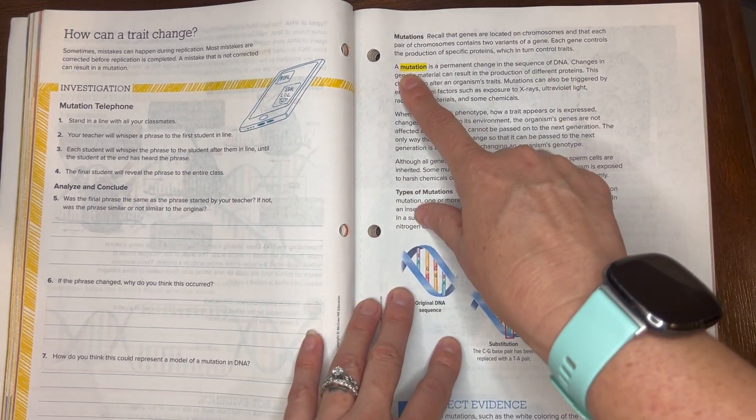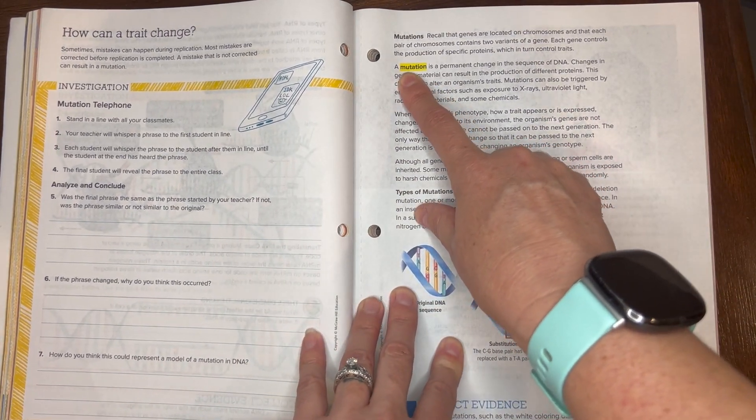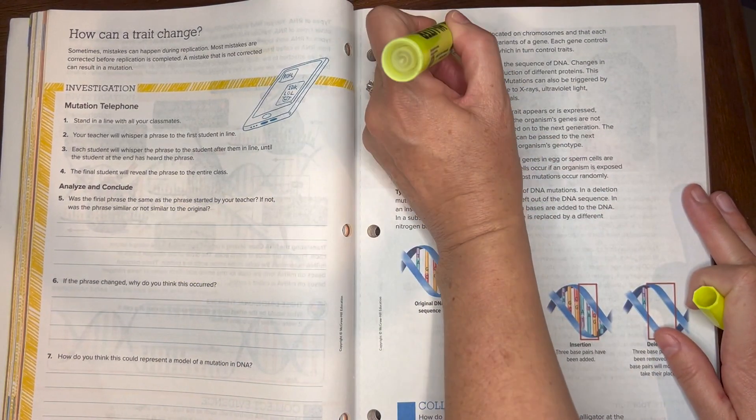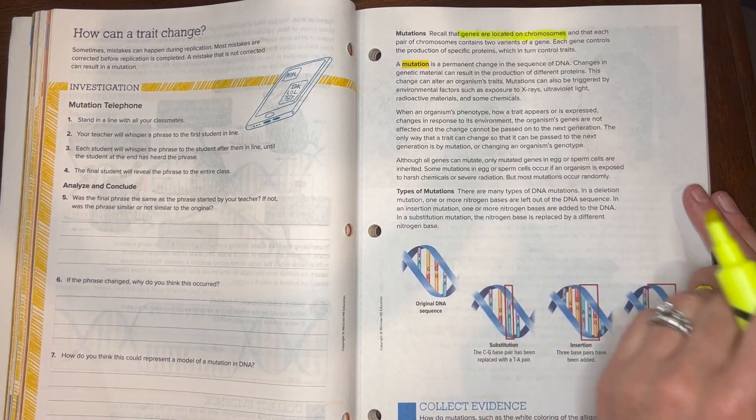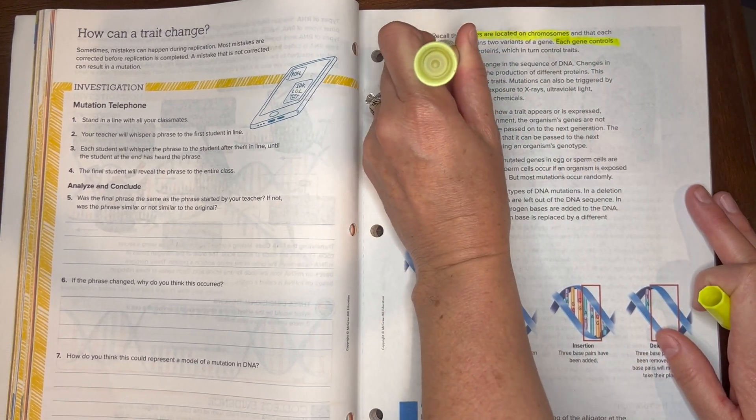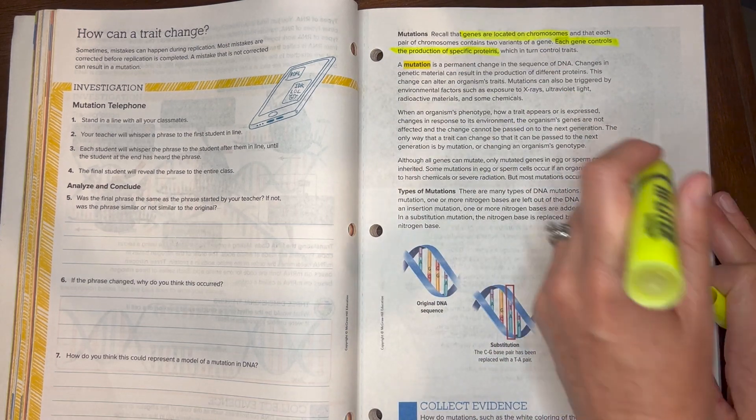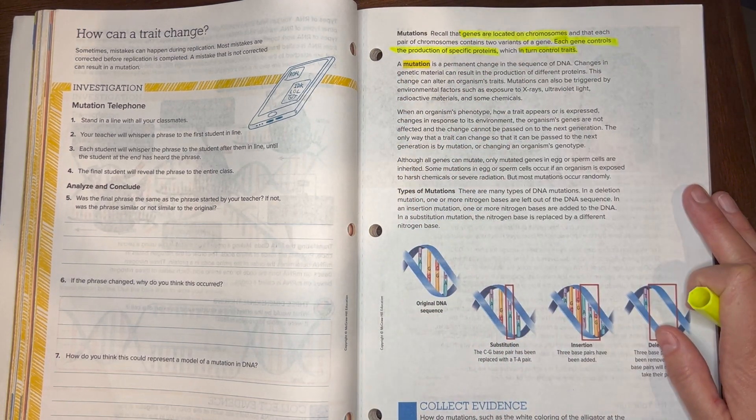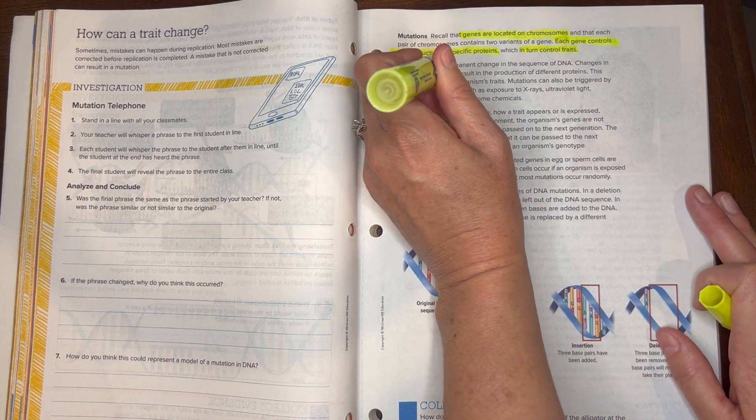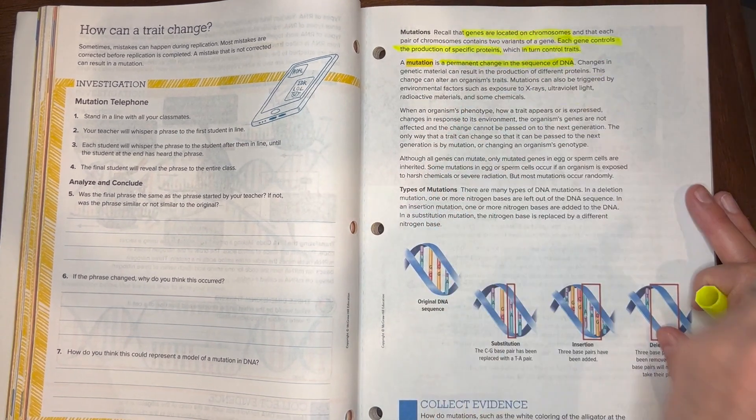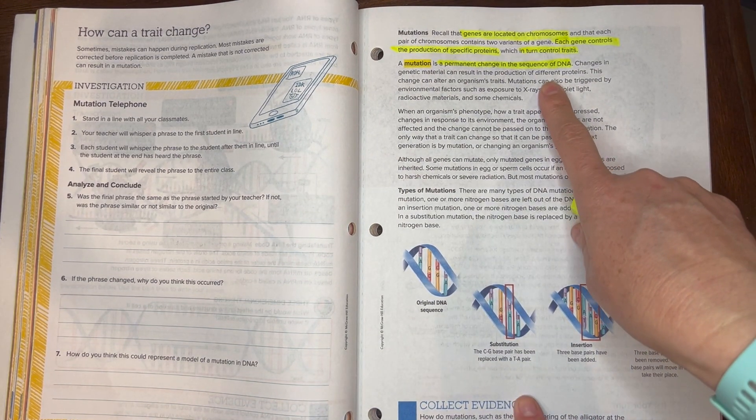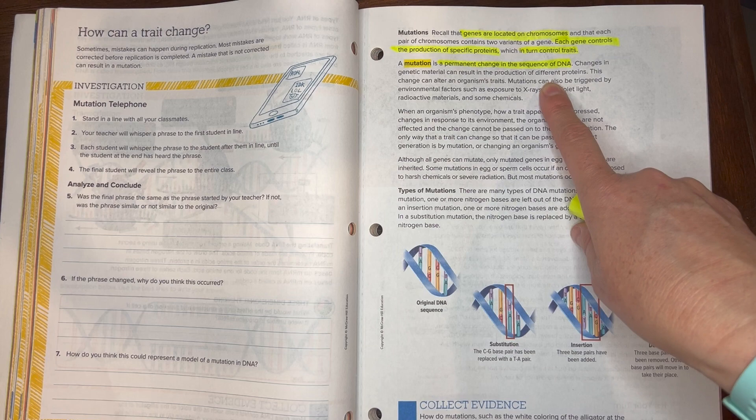Similarly, when making copies, sometimes there's mistakes or slight changes, and we call that a mutation. Just a reminder that genes in DNA are located on chromosomes and each gene controls a specific protein. As I said before, those control traits. Now what is a mutation? A mutation is a permanent change in the DNA.